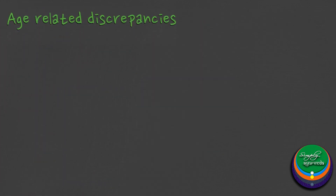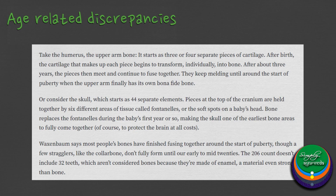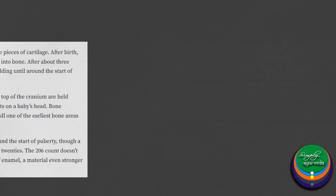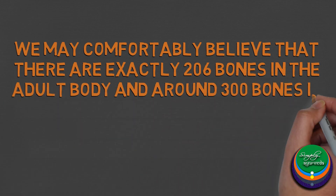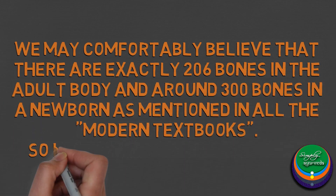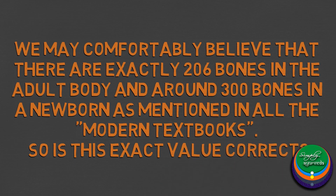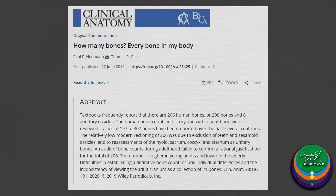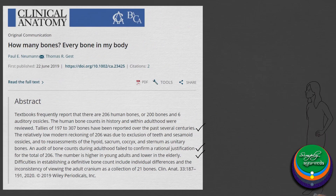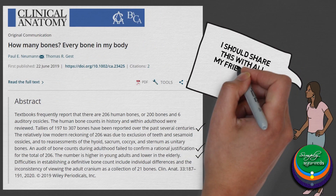Many bones that are separate at birth fuse together later. This variation related to age might have also played a major role in the enumeration of bones at different time periods. We may comfortably believe that there are exactly 206 bones in the adult body and around 300 in a newborn, as mentioned in modern textbooks. However, a recently published article establishes that there is very little chance that a person has exactly 206 bones — which is quite surprising.